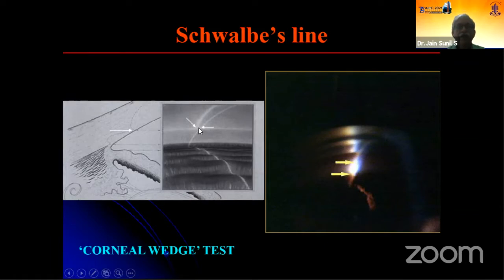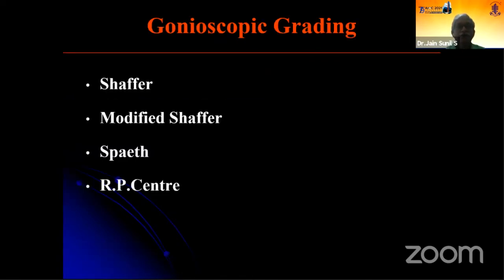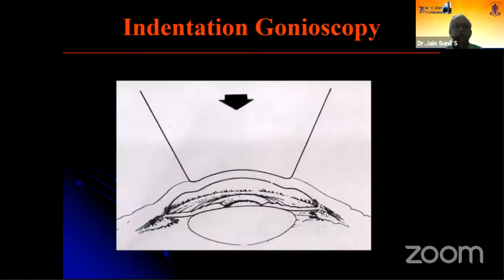Schwalbe's line is where the Descemet's membrane is located on the cornea. Once you identify the structures, you can grade the deeper structures. The corneal wedge test has to be performed to grade the angle structures, and according to what angle structures you see, you can grade them as per whatever grading system you prefer.